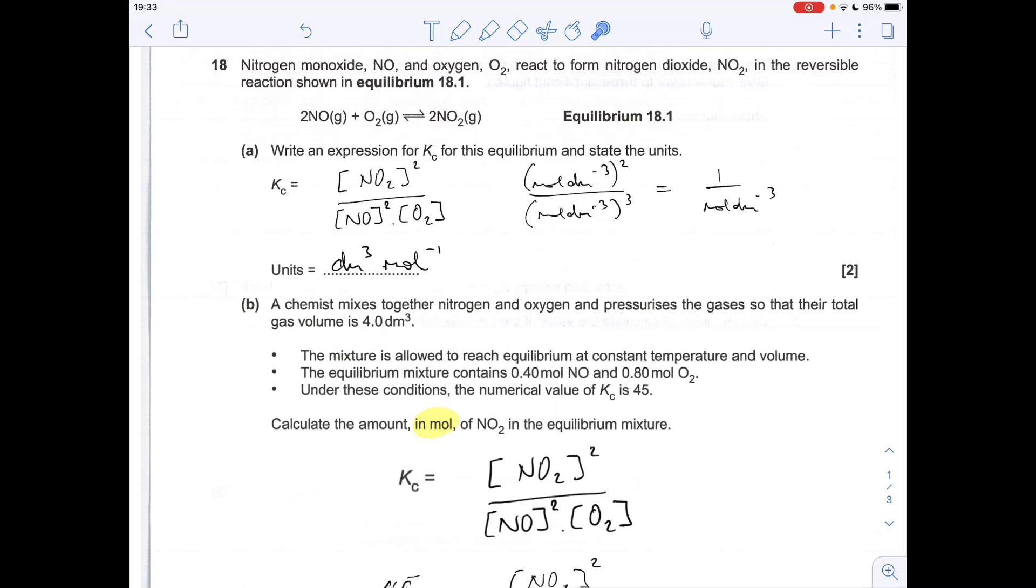Taking everything up to the top, you flip the sign of the power, so you get dm³ mol⁻¹ or you could write mol⁻¹ dm³. Doesn't matter which way around you write these, as long as the correct power is next to the term.